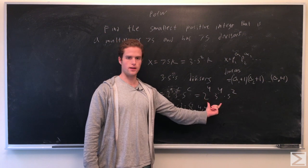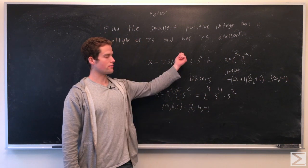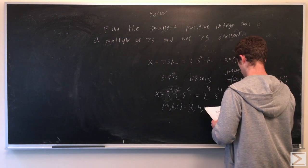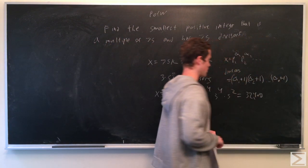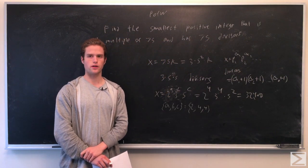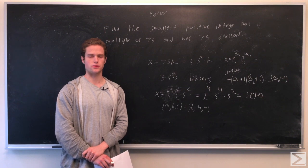It's the smallest number that has 75 divisors and is a multiple of 75. This equals 32,400. Thanks for watching. Please check out centerofmath.org and follow us on Facebook and Twitter.